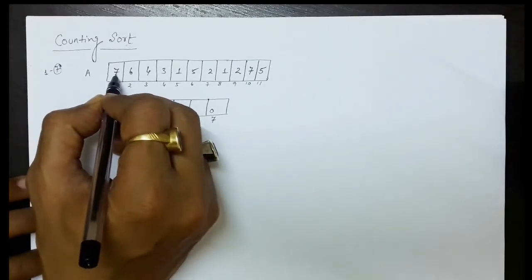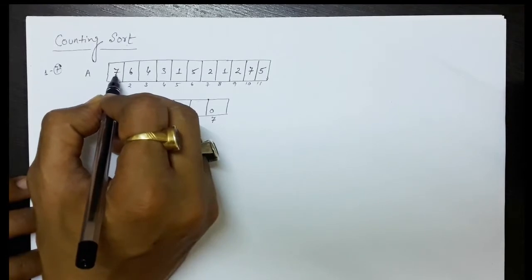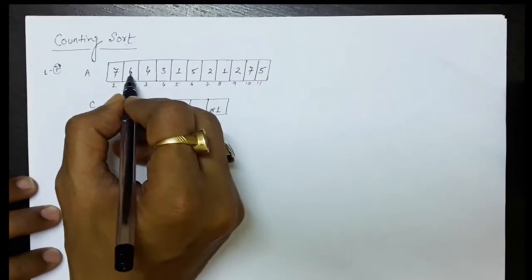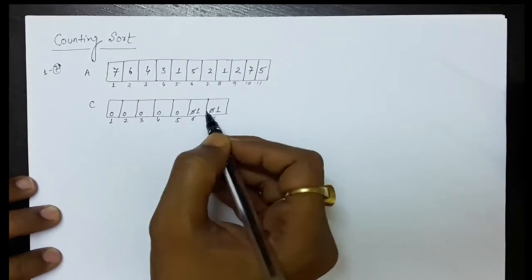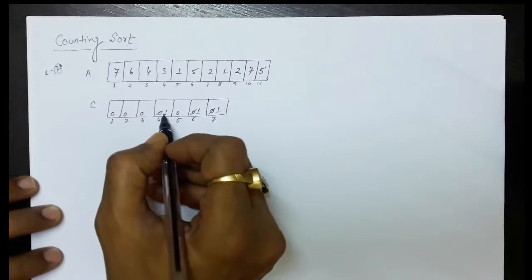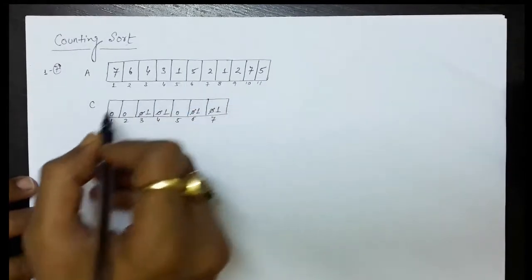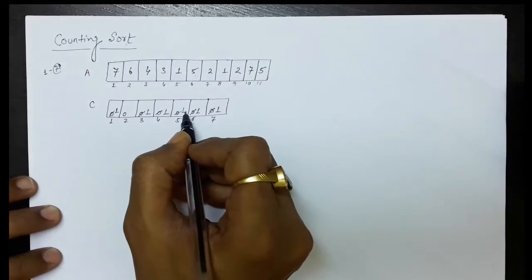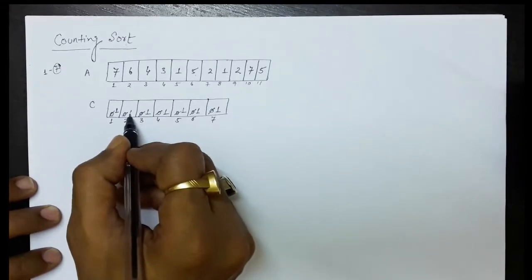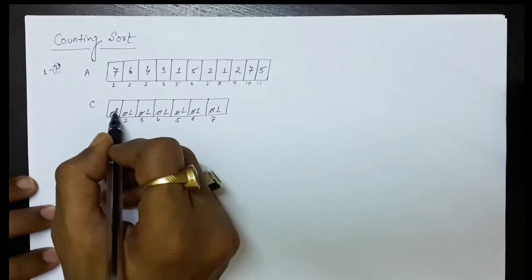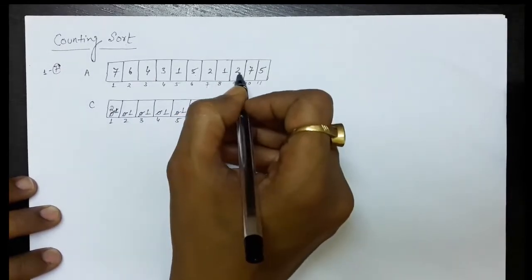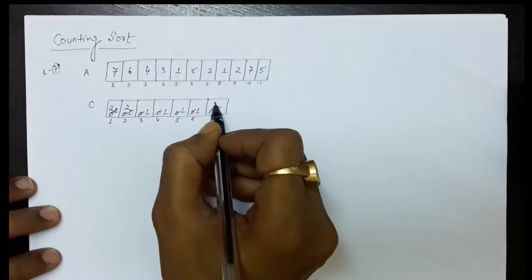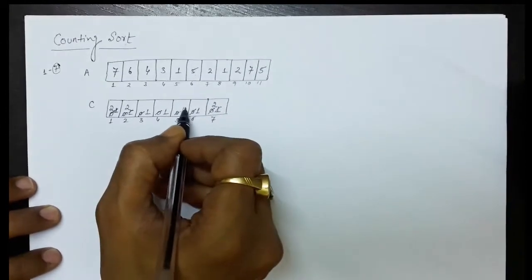Now we take every element of array A and update the counting. For 7, we go to the seventh place in the counting array and update it to 1. For 6, we go to the sixth position and update to 1. Similarly for 4, 3, and 1 — going to the first position and updating to 1. For 5, going to the fifth position. For 2, going to the second position. When 1 appears again, we go to the first position and update the count from 1 to 2. For 2 again, update to 2. For 7 again, update to 2. For 5 again, update to 2.